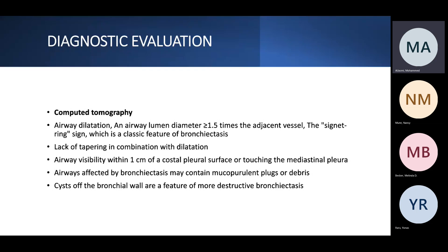On CT scan, the main feature we look for is airway dilatation — the airway lumen will be above 1.5 times the diameter of the adjacent blood vessel. We see this as a signet ring sign, where the blood vessel is the pearl and the bronchus is the ring. Other features include lack of tapering of the airway, airway visibility within one centimeter of the periphery and costal surface, and mucopurulent plugs within the bronchial wall visible on CT.